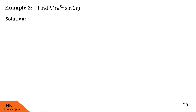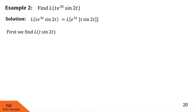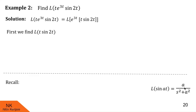In this expression t e raised to 3t sine 2t, we consider sine 2t as our f of t. First, Laplace of sine 2t using the formula is 2 upon s square plus 4. Then Laplace of t into sine 2t by effect of multiplication by t is minus derivative of 2 upon s square plus 4, which is minus 2 into minus 1 upon (s square plus 4) squared into 2s, giving 4s upon (s square plus 4) squared.